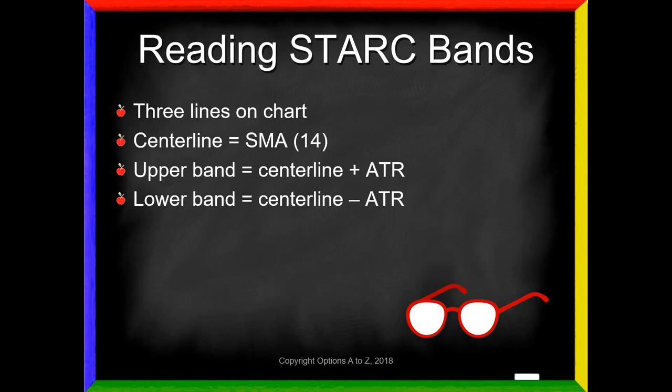One thing that makes STARC Bands a little different is that Stoller also creates the idea of a multiplier that we can use to expand the width. So if I use a multiplier of one, we'll just get the moving average plus and minus the average true range. Most of the time people are going to use a higher number — 1.25, 1.3, 1.5 — something like that, to say I not only want to account for the average true range, but I want to expand it a little bit. If I use a multiplier of 1.3, I'm expanding that range by 30%. Depending on the stocks and your strategy, you might want to use different multipliers.